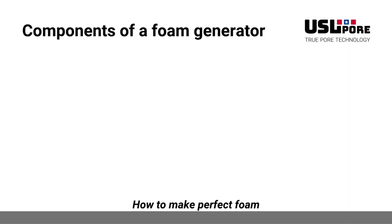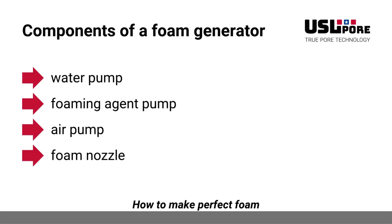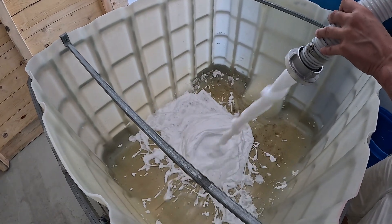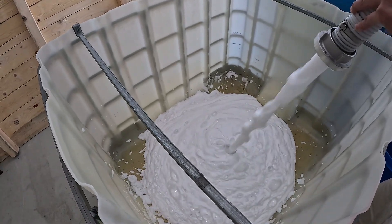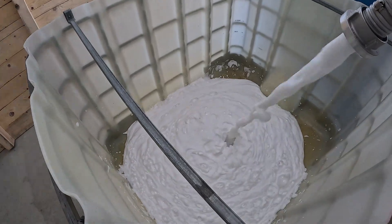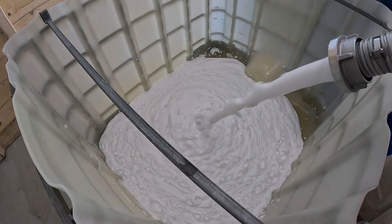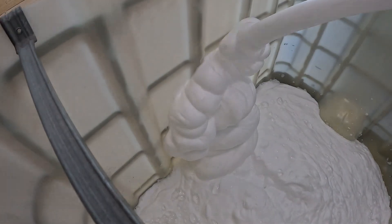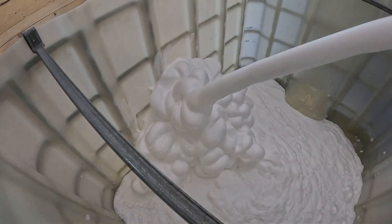Components of a foam generator: a water pump, a foaming agent pump, an air pump, and the foam nozzle. Foaming agent, water, and air are injected into the foam nozzle. Simpler foam generators are equipped with only one pump, so you need to dilute the foaming agent manually in water prior to injection according to the appropriate ratio. More professional models enable you to adjust the foaming agent injection rate electronically or mechanically in an automatic way. In simple foam generators, the nozzle can sometimes contain metal kitchen sponges that corrode over time, leading to inconsistent foam generation.